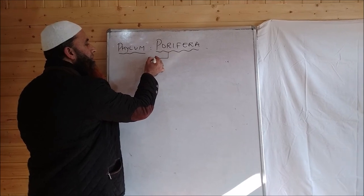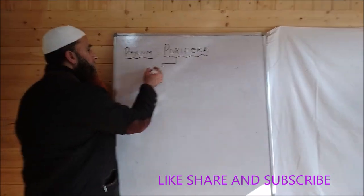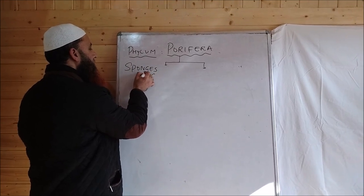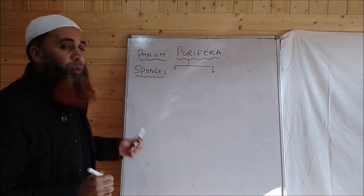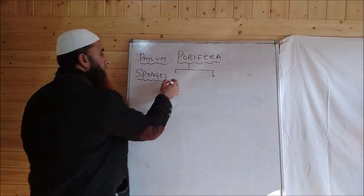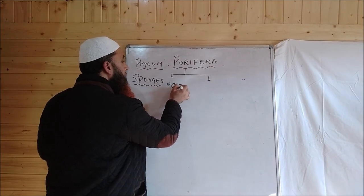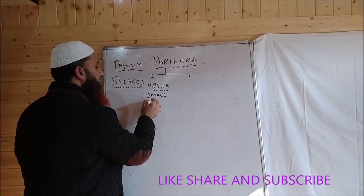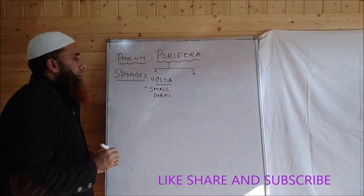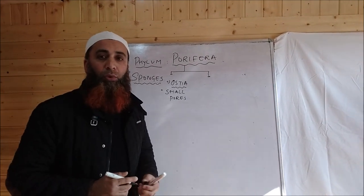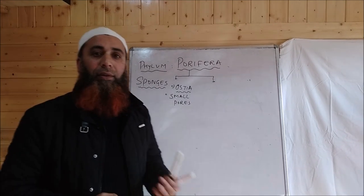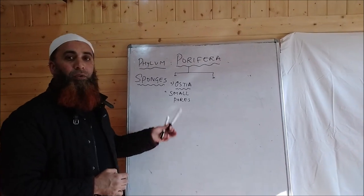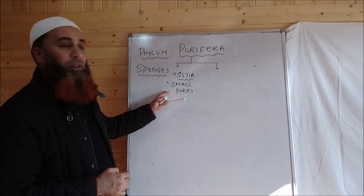Porifera is a group of animals characterized by the presence of pores on their body and they are often called sponges. They have two kinds of pores. Smaller pores known as ostia are small pores through which water enters into their body. That system is known as the canal system, and the entry points of water are known as ostia.